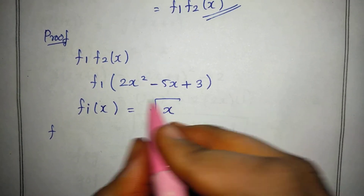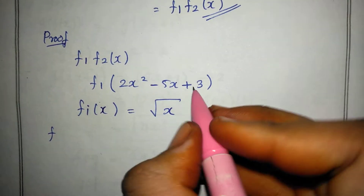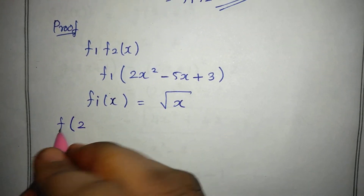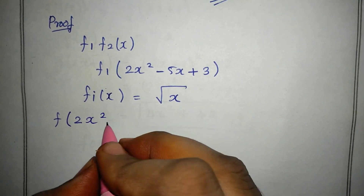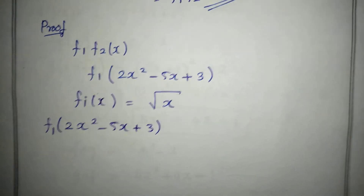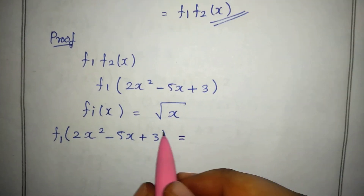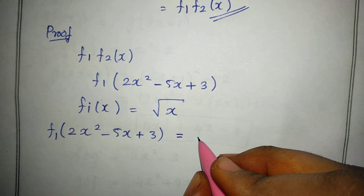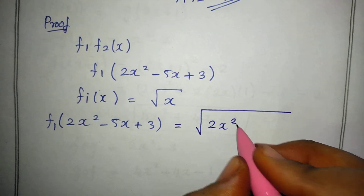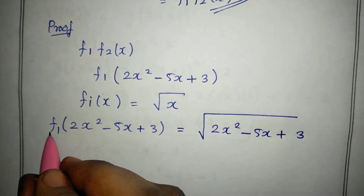f1 of x is equal to root of x. And f of 2x squared minus 5x plus 3 is equal to x squared minus 5x plus 3, confirming the composition.